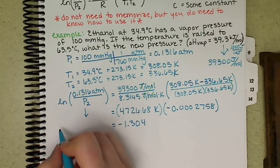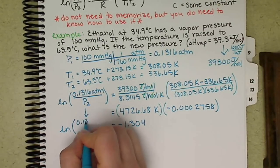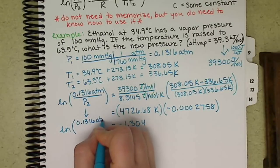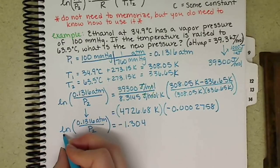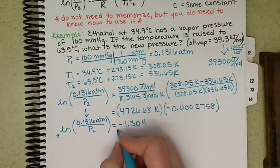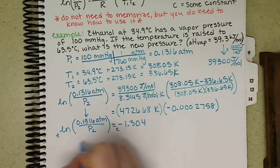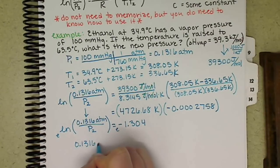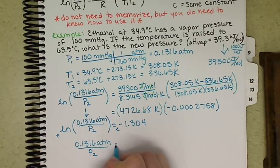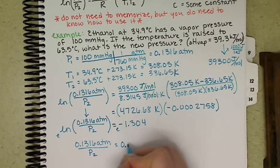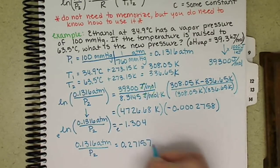And I haven't done anything to my left hand side, so I still have natural log of 0.1316 divided by P2. Get rid of my natural log, take the E, and I get 0.1316 atmospheres divided by P2 equals positive 0.27157.